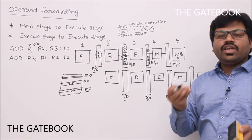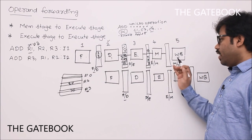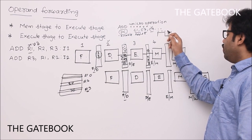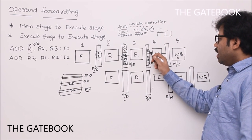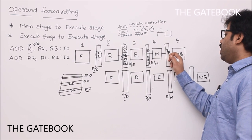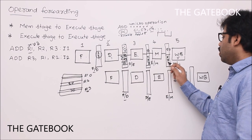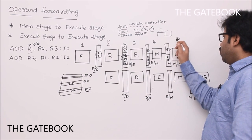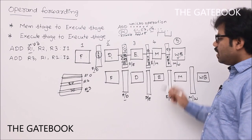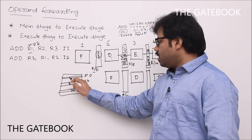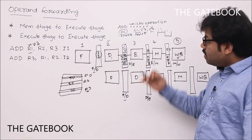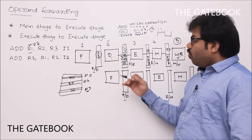We move 50 and the address xyz through the memory-write-back buffer so that at the fifth clock cycle, the write-back stage writes 50 into register xyz (i.e., R1). This is how the add instruction completes execution in the pipeline.